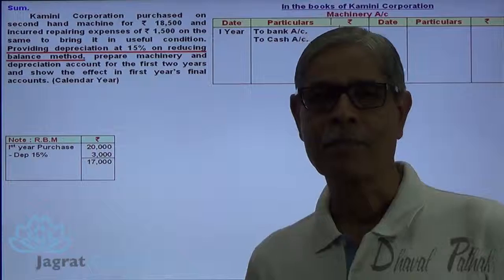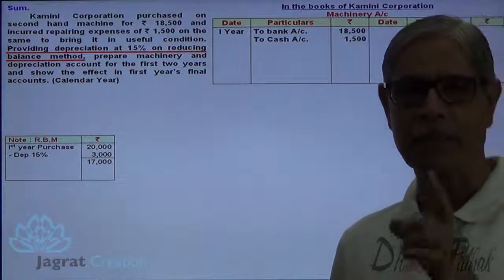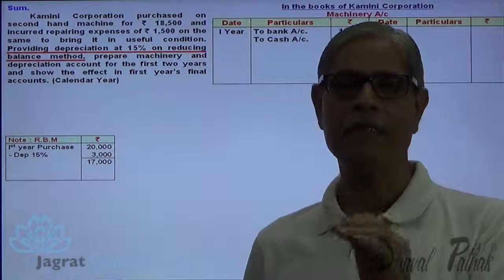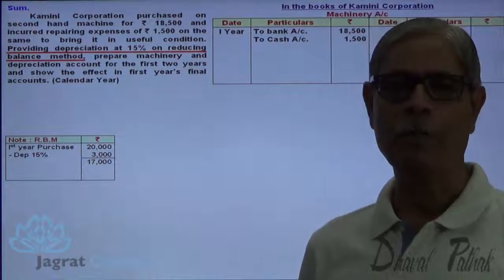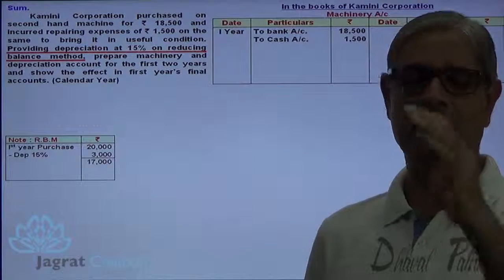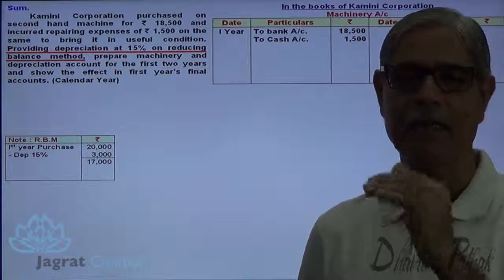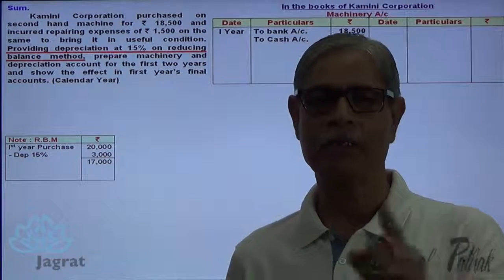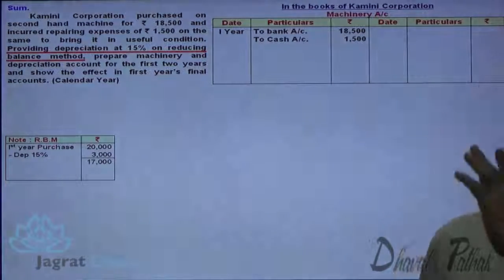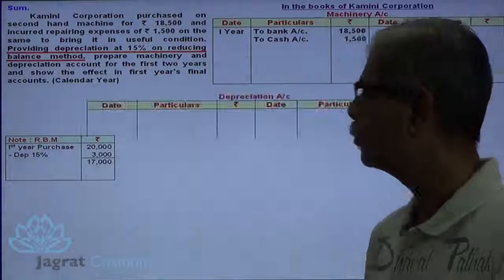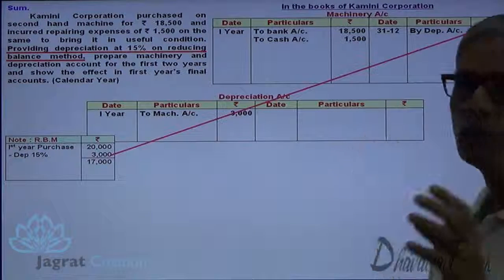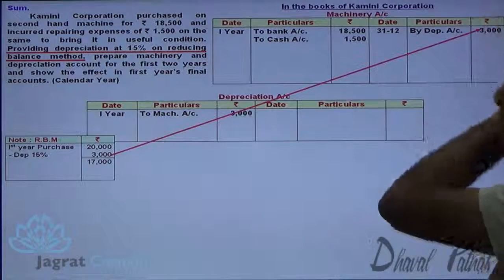The journal entry for depreciation is: depreciation account debit, to machinery account credit. Depreciation is an expense because the usage of machinery causes its value to decline. So depreciation account is debited and, since the value of the asset is reduced, machinery account is credited. That is the journal entry — depreciation account debit to machinery account credit.